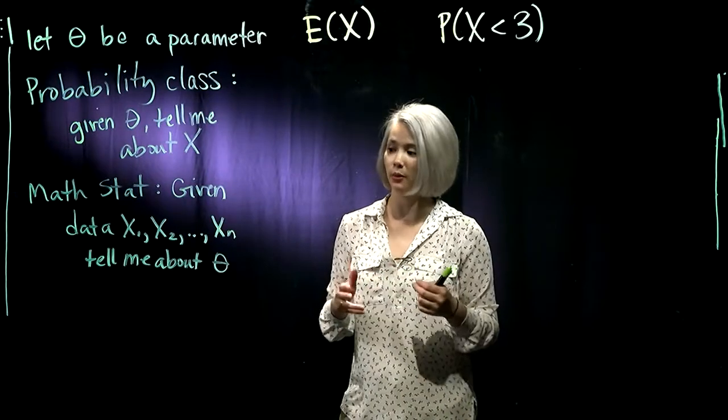Now in Math Stat class, we're swapping it. We're swapping what we know and what we want to know. So in Math Stat class, we collect a bunch of data. Usually it's a random sample, meaning that we have independent, identically distributed random variables. So x1 through xn is our data set of size n. And now we're saying, here's this data, tell me something about theta.